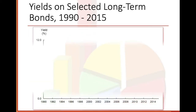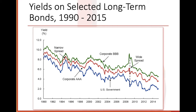Yields on selected long-term bonds from 1990 to 2015. Notice that bond yield percentages definitely decreased over time, but were pretty consistent as time went on. Time is on the x-axis and yield percent is on the y-axis. Looking at this over time, they're very consistent, and you can see the market kind of decreasing. By 2015, the U.S. government bond was at about two to three percent.